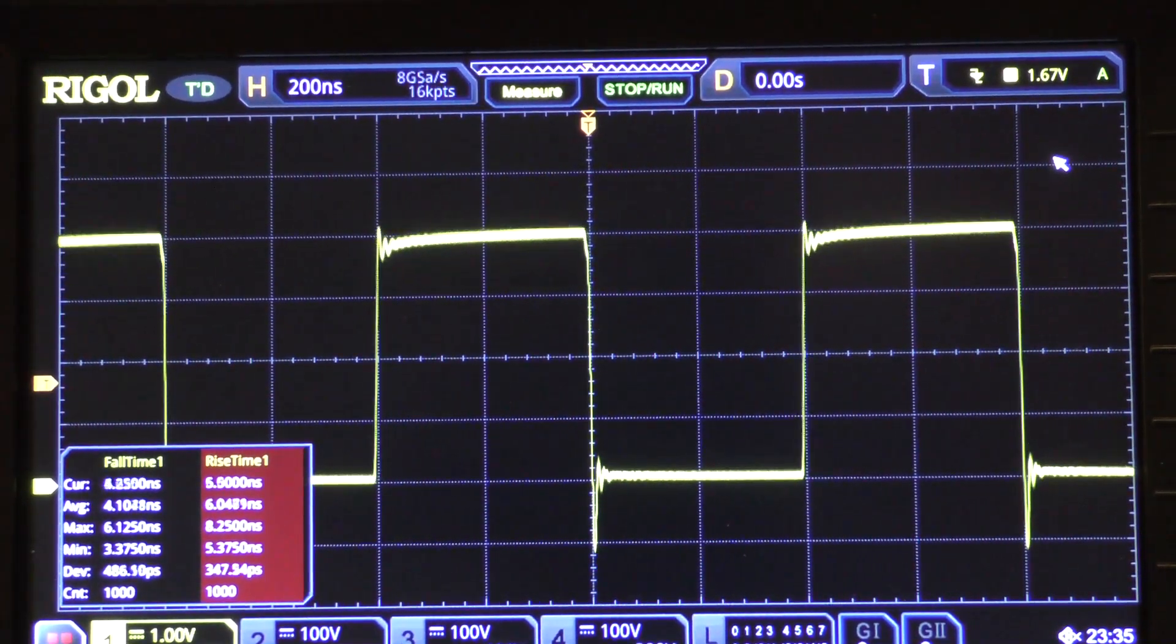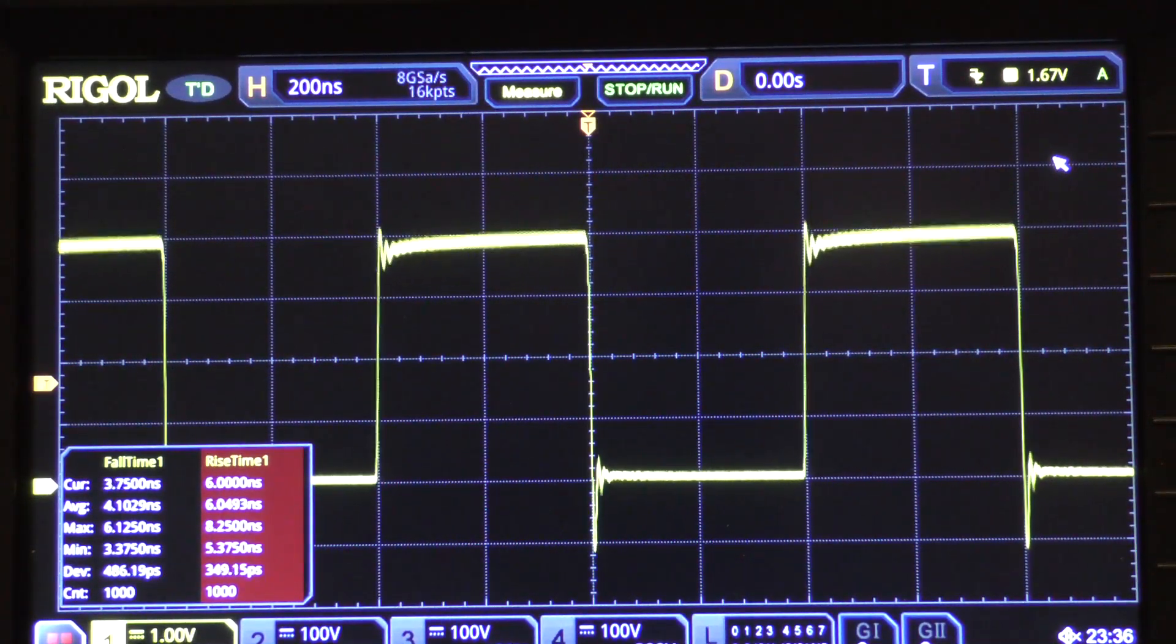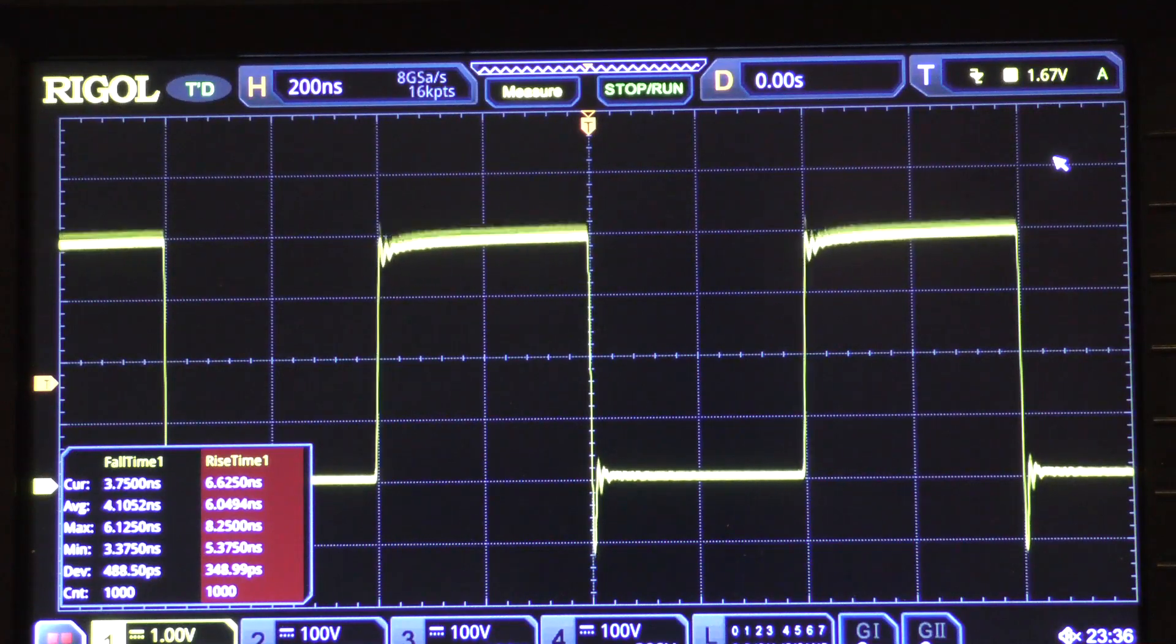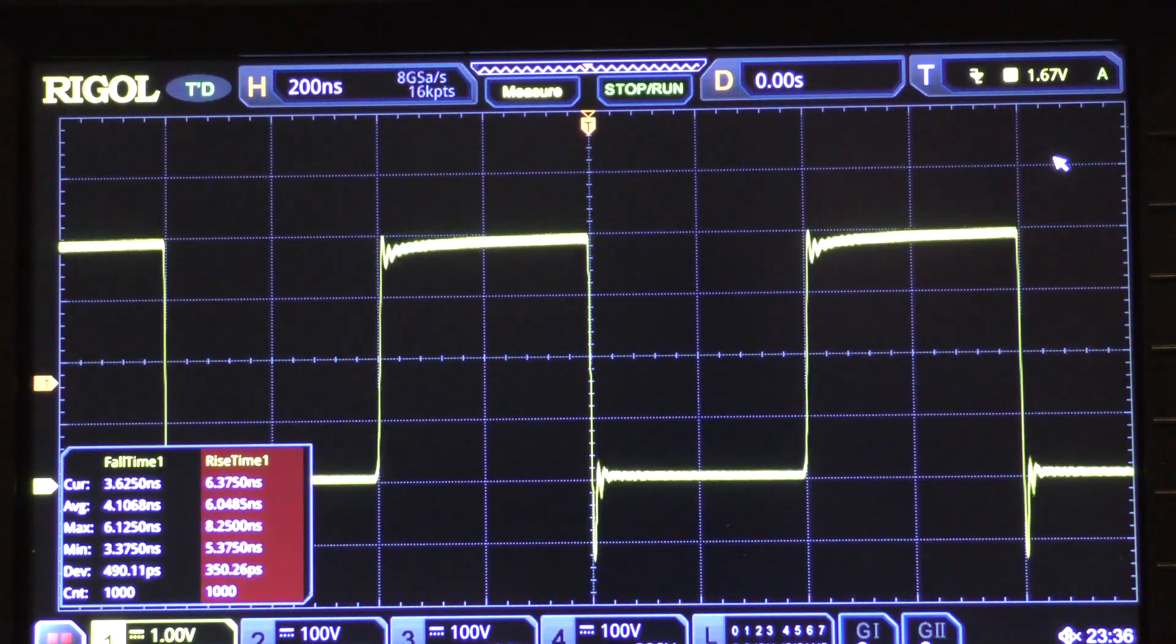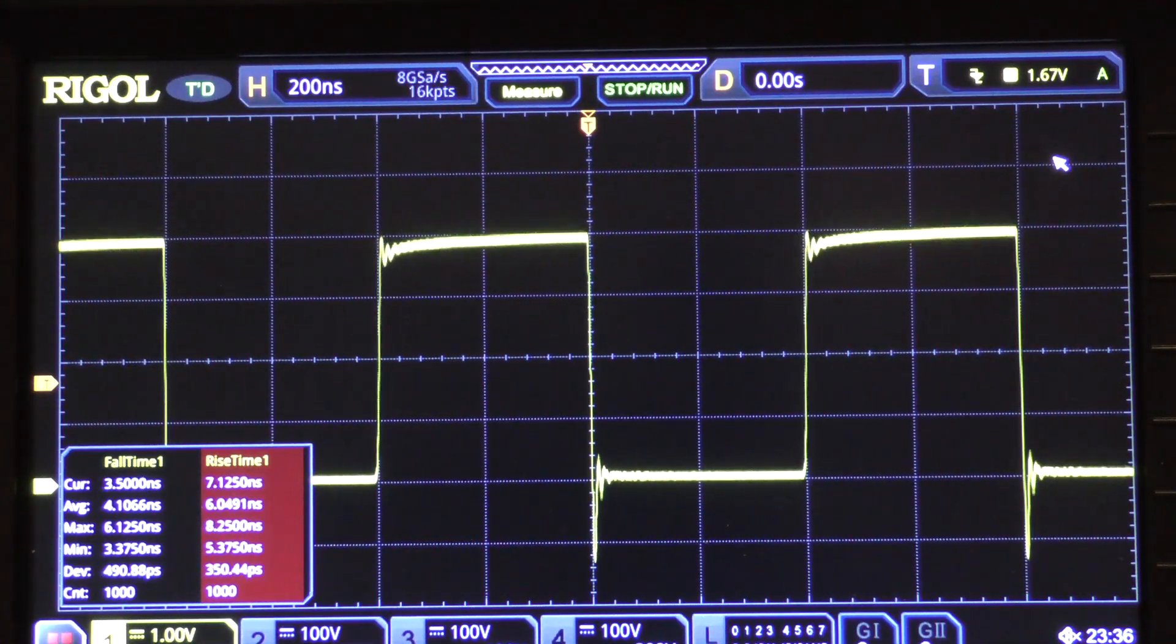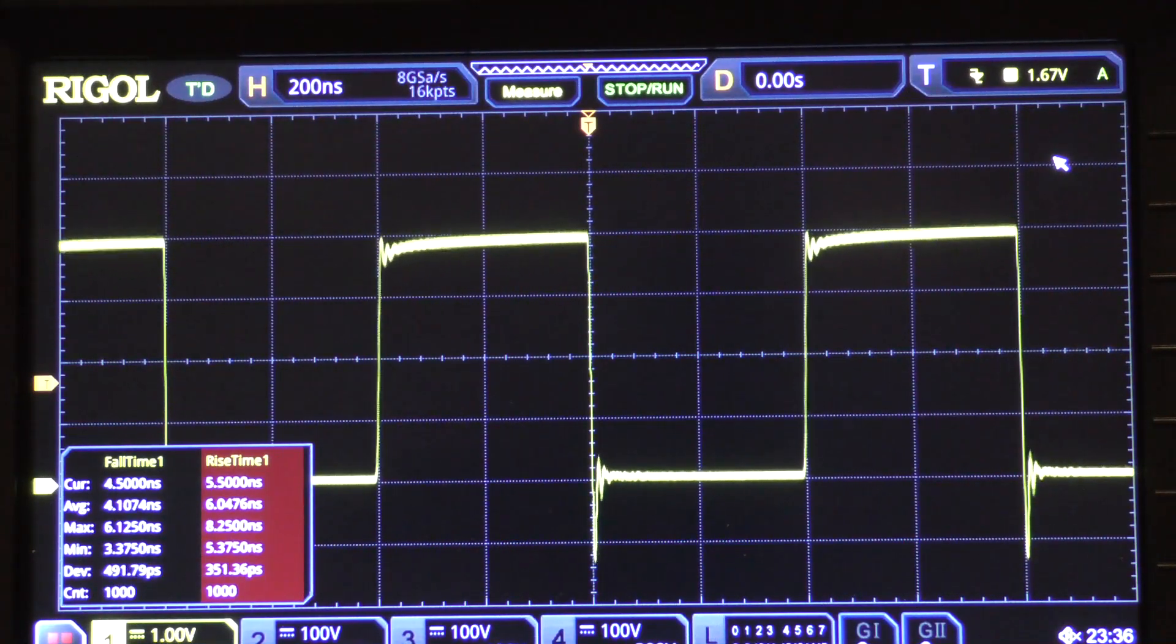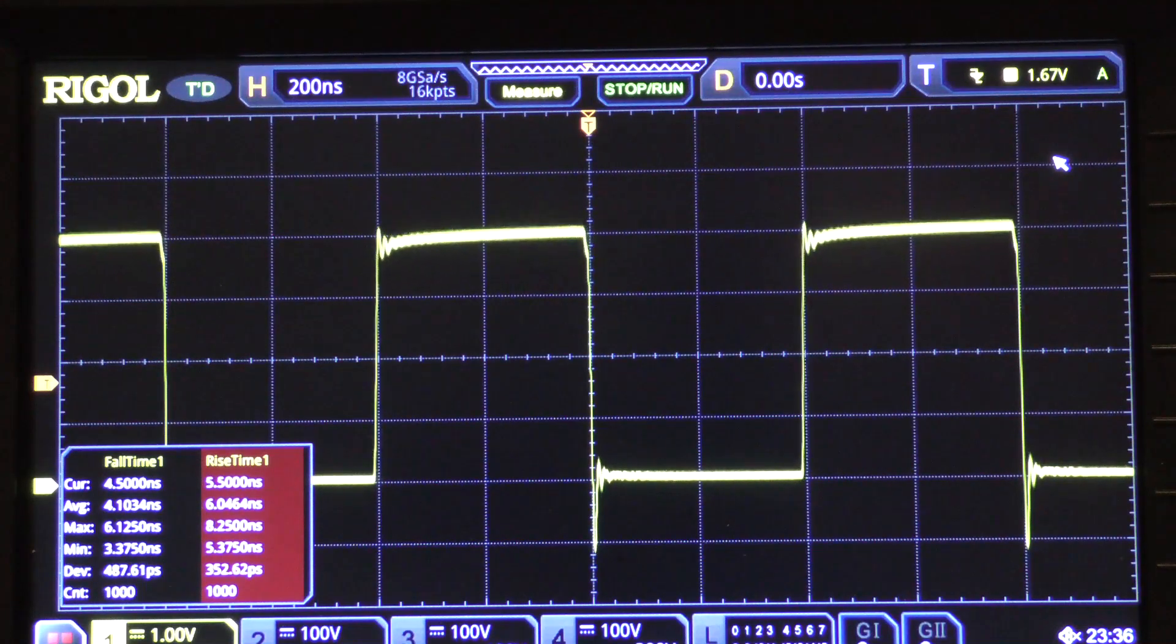In our previous video we were looking at a signal that had a variable hold time that sometimes missed the window. What we're looking at right here is the data signal, the D input to that flip-flop. You may recall that part of the problem was the fall time of this signal was quite a bit slower than the clock.